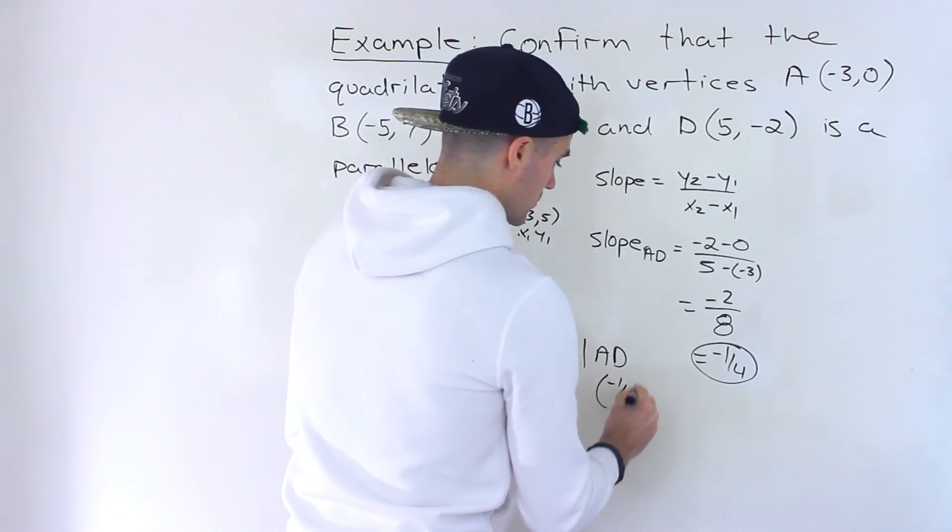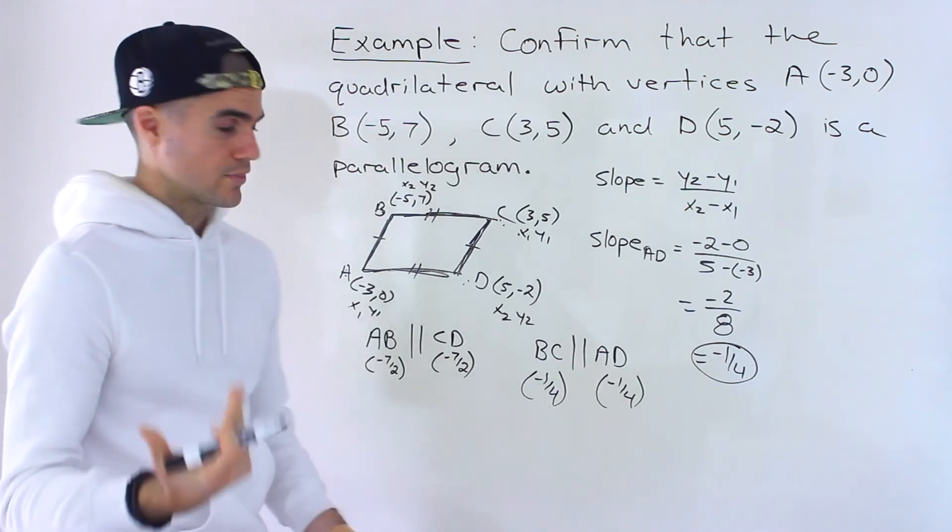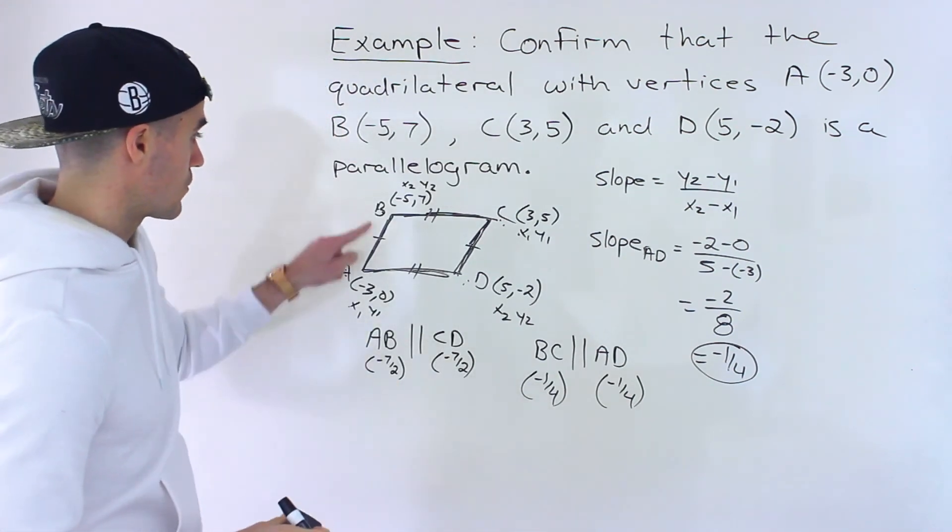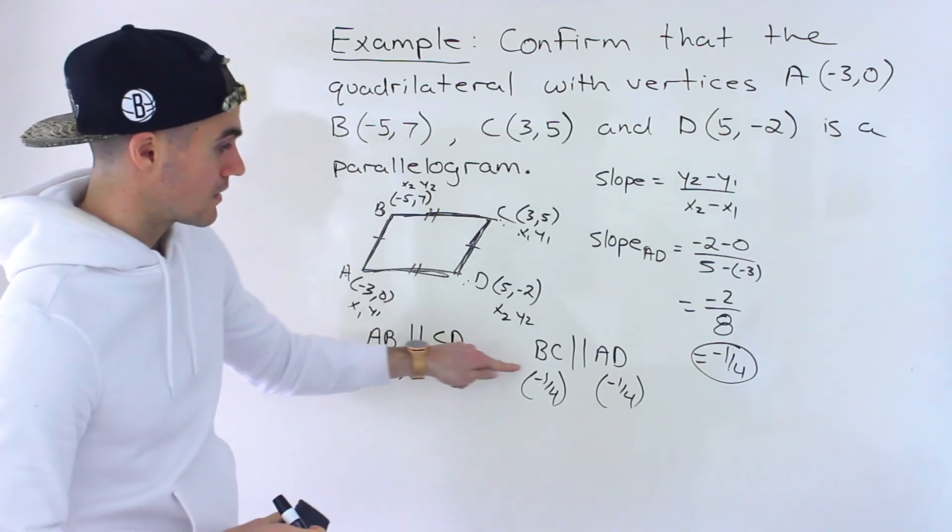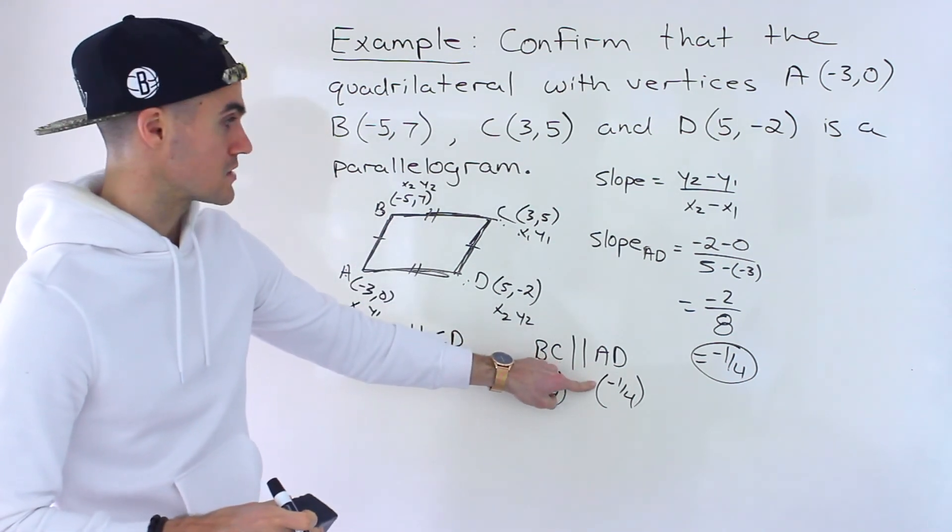And that's it. We pretty much confirmed it with those four calculations. So this side, this side are parallel because the slopes are the same. This side, this side are parallel because the slopes are the same.